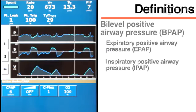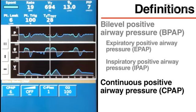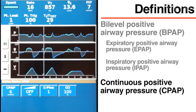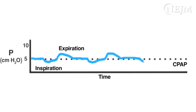Another common non-invasive mode is continuous positive airway pressure, or CPAP. CPAP is a spontaneous breathing mode that is distinct from BPAP. In CPAP, the ventilator delivers one pre-specified positive pressure throughout the respiratory cycle. It does not deliver additional inspiratory pressure, and therefore does not directly support ventilation. This graph shows airway pressure in a patient receiving CPAP. The pressure falls during inspiration as the patient takes spontaneous, unsupported breaths, and returns to the CPAP value during expiration. Many ventilators can also briefly reduce airway pressure during expiration to increase patient comfort.